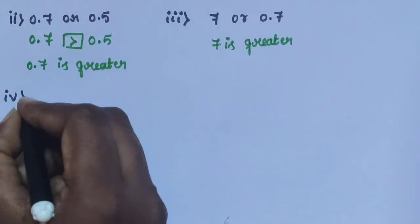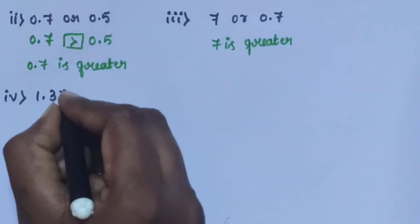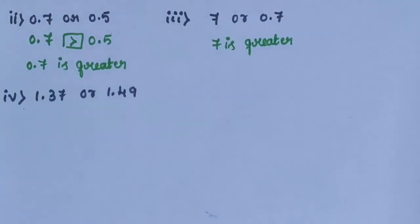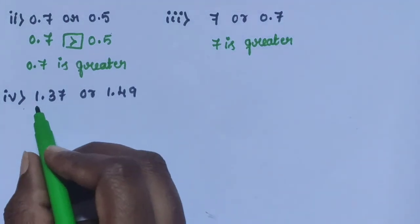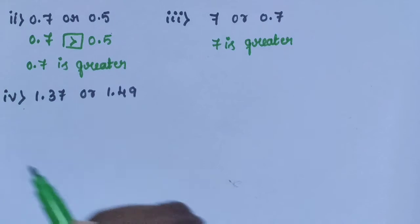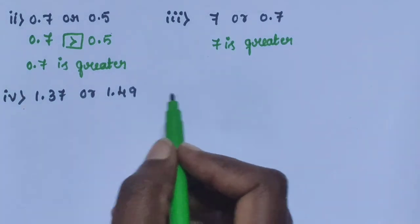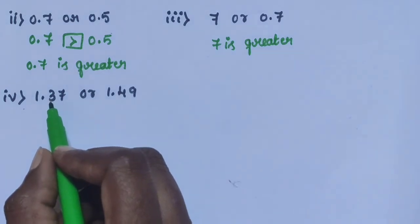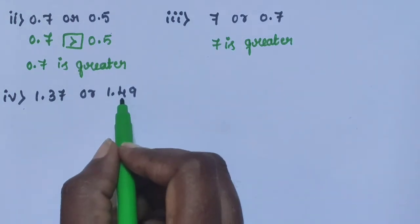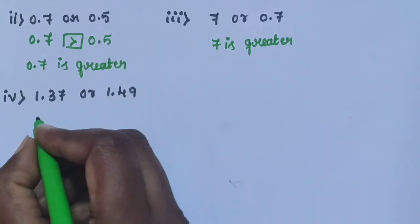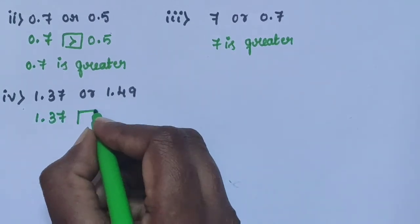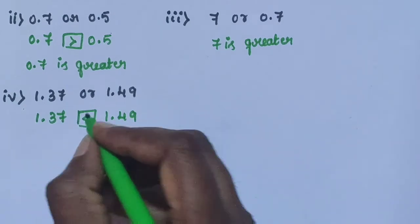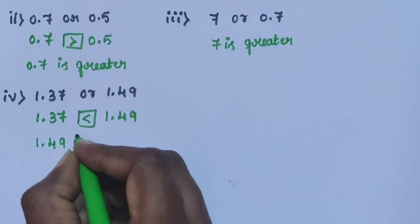Sub-question 4: 1.37 or 1.49. Compare the whole number part — units place is 1 and 1, same. Next compare the decimal part: tenths place is 3 and 4. Compare 3 and 4 — 4 is the greatest. Therefore, 1.49 is the greatest decimal number. 1.49 is greater.